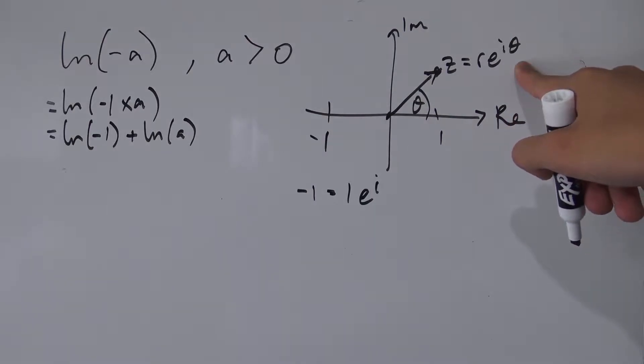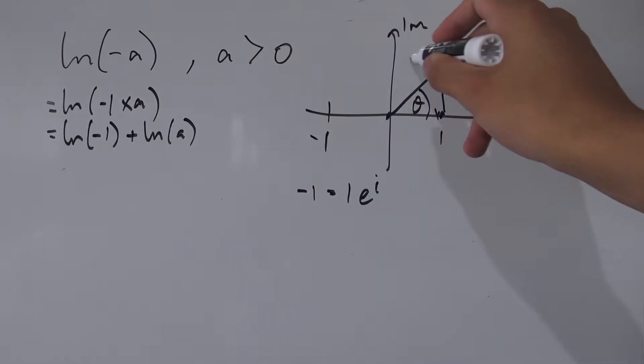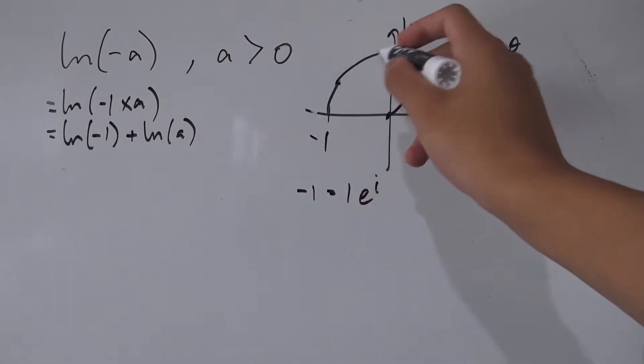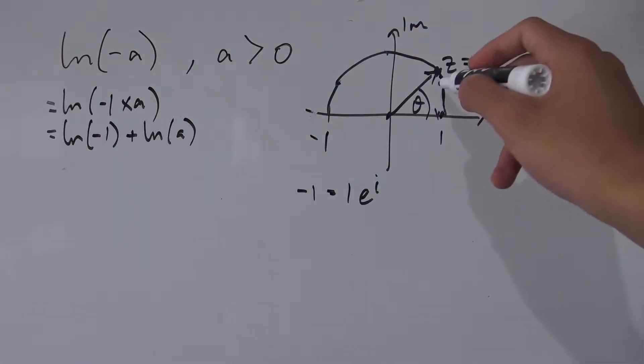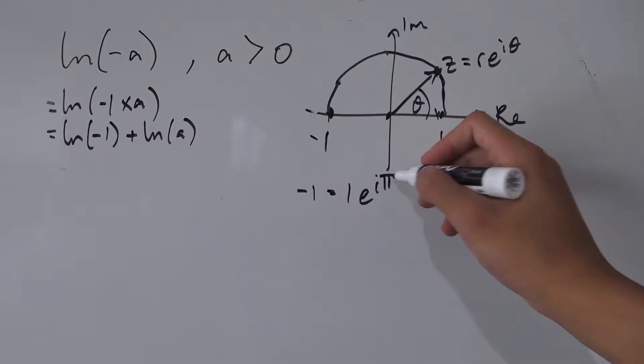And theta here, well if you look at the unit circle, to get from one to negative one you have to go all the way around 180 degrees. That's an ugly semicircle, I apologize. So you have to go all the way 180 degrees around to reach negative one. But 180 degrees is exactly pi in radians.